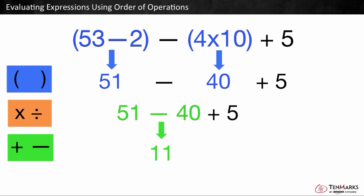51 minus 40 is 11. This leaves us with a simplified expression of 11 plus 5. 11 plus 5 is equal to 16. In this lesson, you learned how to evaluate expressions using order of operations. Thanks for watching!